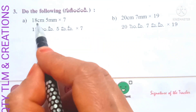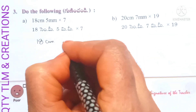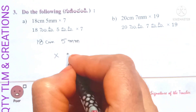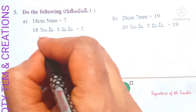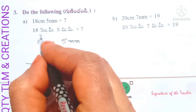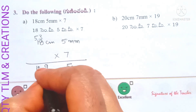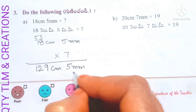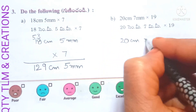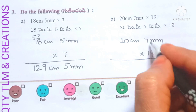Next, do the following multiplication: 18 centimeters and 5 millimeters multiplied by 7. 5 millimeters times 7 equals 35 millimeters; write 5 carry 3. 18 centimeters times 7 equals 126, plus 3 equals 129. Result is 129 centimeters and 5 millimeters.